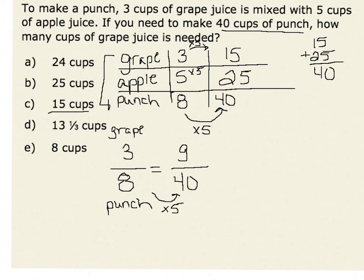To keep the equivalent ratios, I would have to also multiply my numerator by five. This gives us the part grape is three times five, which is equal to 15 total cups of grape juice.